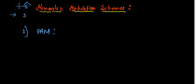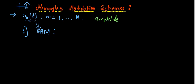Let's say the waveforms being transmitted are given by s_m(t), where m is the index — m=1 denotes the first waveform and so on — and we have capital M number of waveforms. These waveforms can in general be of any form: amplitude modulated, phase modulated, and so on. Based on that, we have different modulation schemes. The waveforms should differ either in amplitude, phase, frequency, or some combination of these signal parameters.